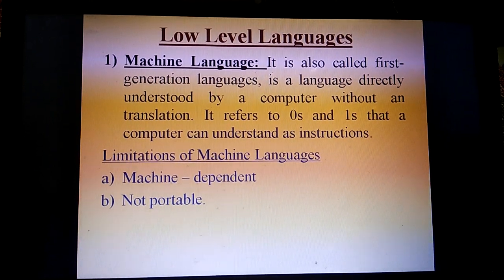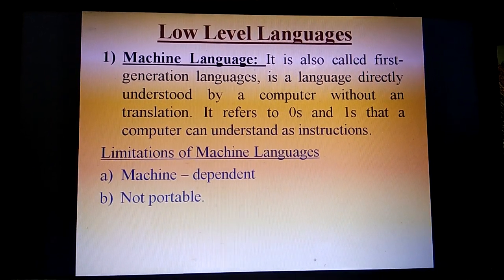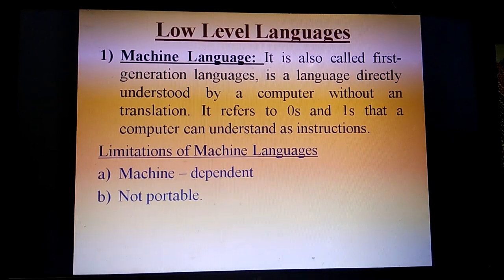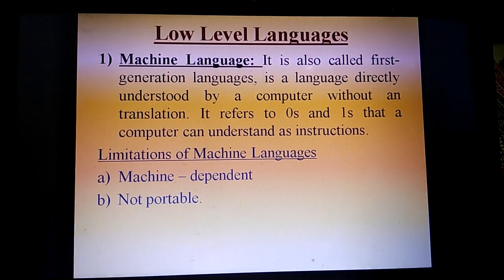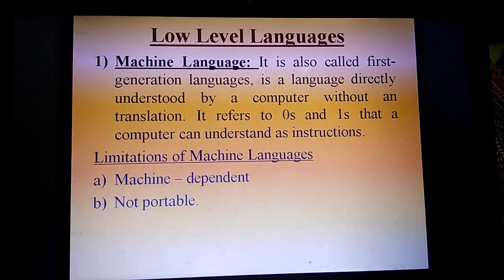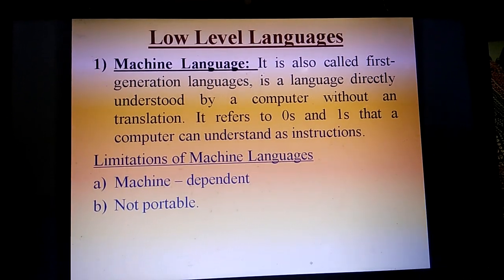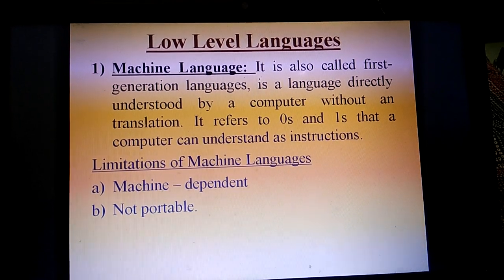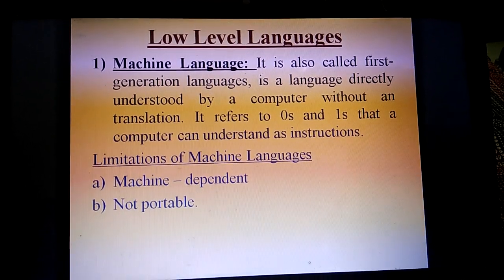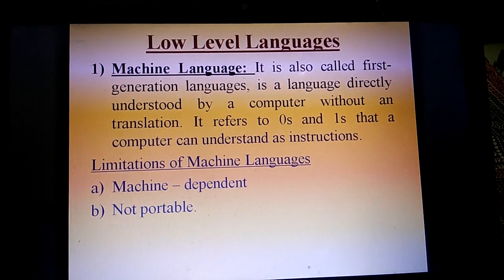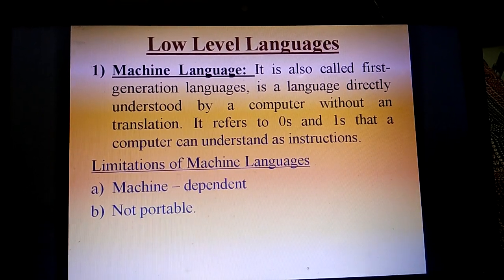The first part is low level languages. Machine language, also called first generation language, is a language directly understood by a computer without any translation. It refers to zeros and ones that a computer can understand as instructions. Due to this reason, it is also called low level language, abbreviated as LLL.